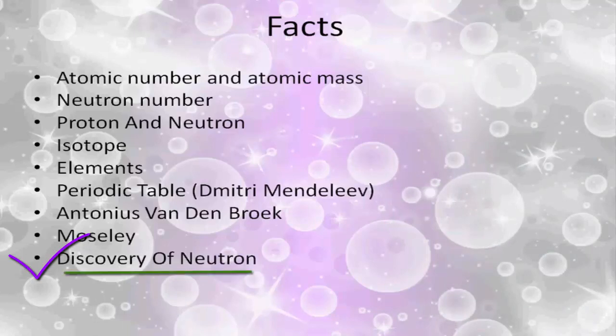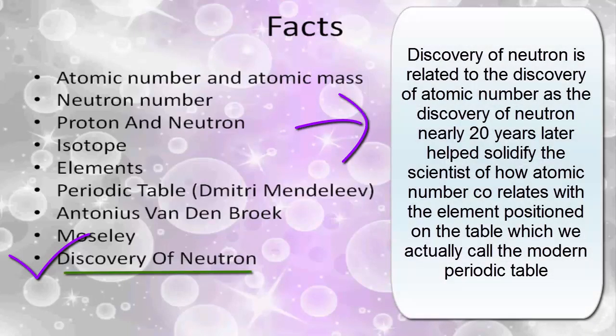So how is the discovery of neutron related to the atomic number? The discovery of neutron nearly 20 years later helped solidify scientists' understanding of how atomic number correlates with the element's position on the table which we actually call the modern periodic table.